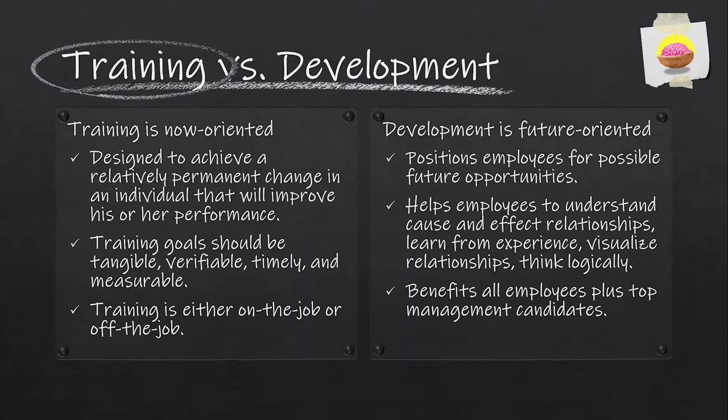So, employee training. One thing I want to do before we jump into this is make sure that we understand the difference between training and development. Training is very now oriented, meaning it's designed to achieve a relatively permanent change in an individual that will improve his or her performance in the current job. So training is all about making the person successful for the role they currently inhabit. Training goals should be tangible, verifiable, timely, and measurable — we're going to talk about that today.